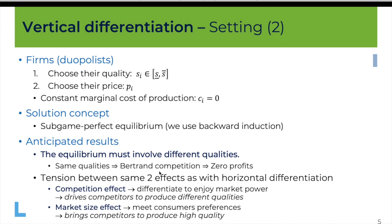There are the same two effects at play as with horizontal differentiation. First, a competition effect: firms want to differentiate and choose different qualities because that allows them to relax price competition, set higher prices, and make higher profits. But at the same time, both firms would prefer to choose a quality more appreciated by consumers — both would like to produce the high quality. This is the market size effect. The difference from horizontal differentiation is that there is one quality with larger demand, and that is the high quality.